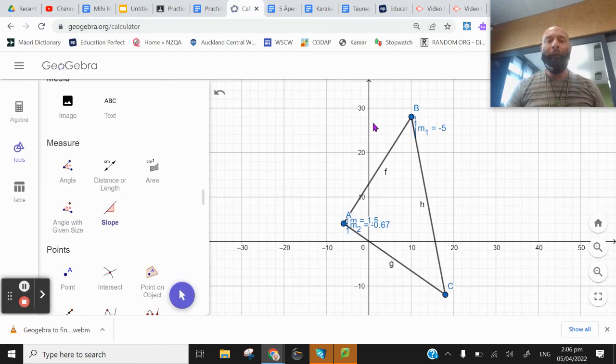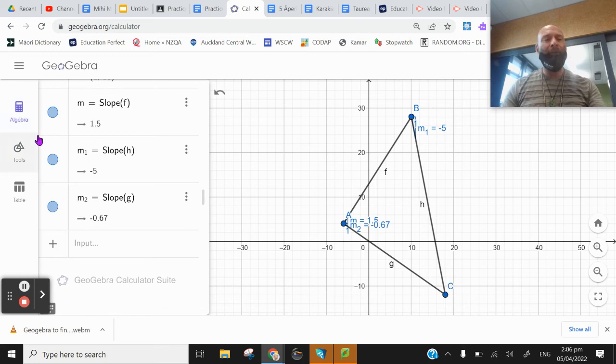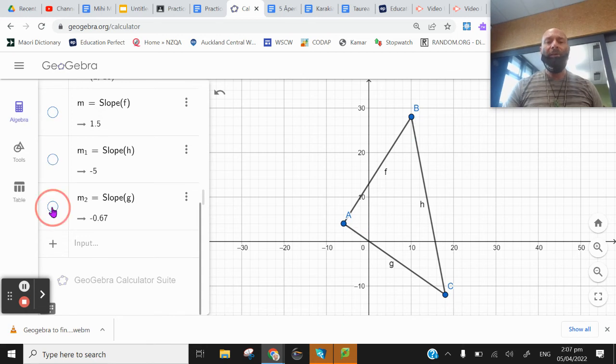We already know how to plot points. In the last lesson, we talked about how to find the steepness that you might be thinking, oh, all those steepnesses, it's getting in the way. It's making everything a little bit cluttered. Go back to the algebra tab and tick on those blue circles. You will notice that takes it away, cleaning up the view.